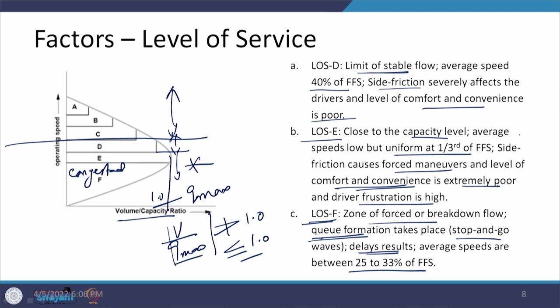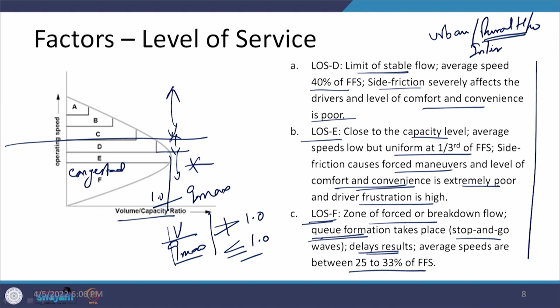These speed values may change when looking at an urban road versus a rural highway, which are nowadays referred to as inter-urban roads or highways. In urban areas, the values defined here — one-third, 40 percent, 25 percent — are further reduced. That will be a point of further discussion when we look at level of service in more detail.